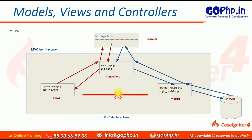If you can understand this MVC architecture, you can learn any PHP framework easily, because every framework follows the same rules and regulations — Laravel, Zend Framework, CI3, CI2, and now CodeIgniter 4. When I explain the programmatic way, I will revisit these diagrams and explain how to work with views, models, and everything together in CodeIgniter 4. This is all about MVC architecture. If you have any doubts, please comment under the video and subscribe to our YouTube channel GoPhP.